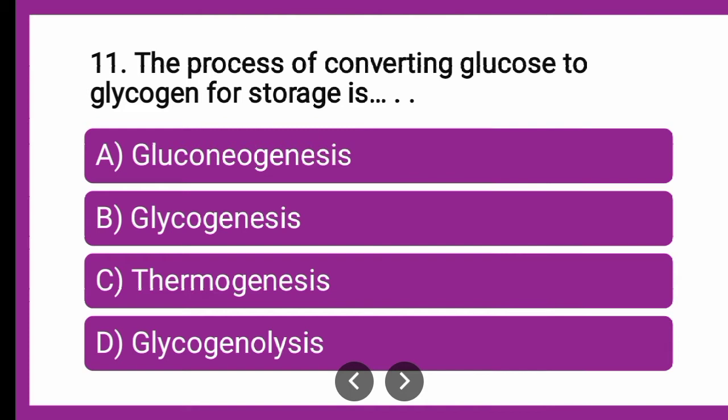Question number 11: The process of converting glucose to glycogen for storage is — whether the process is glycogenesis, glyconeogenesis, thermogenesis, or glycogenolysis. Which amongst the given is correct for the process of converting glucose to glycogen?